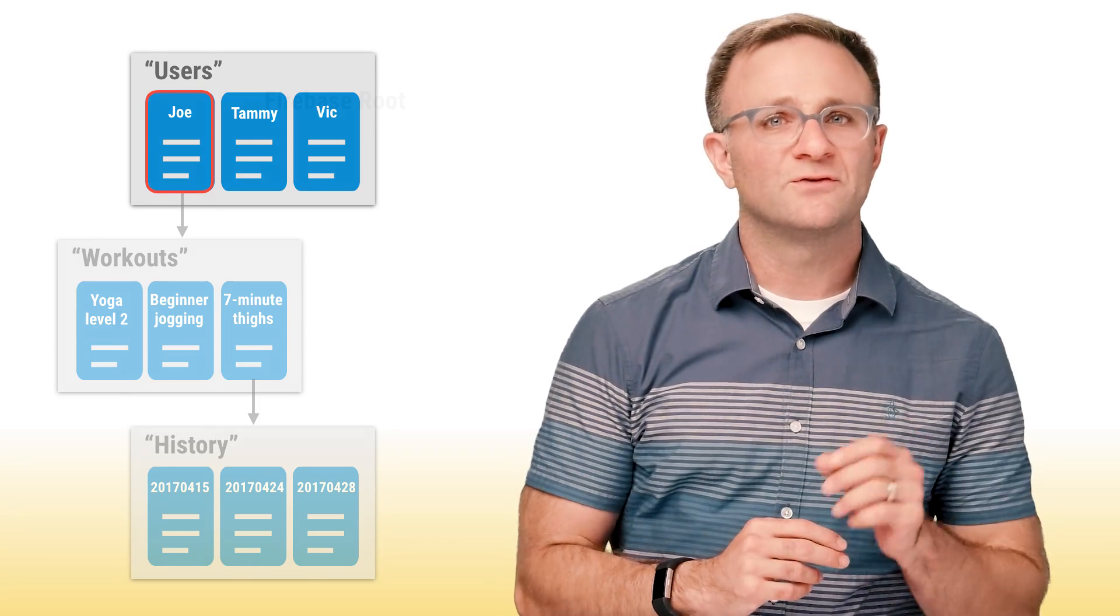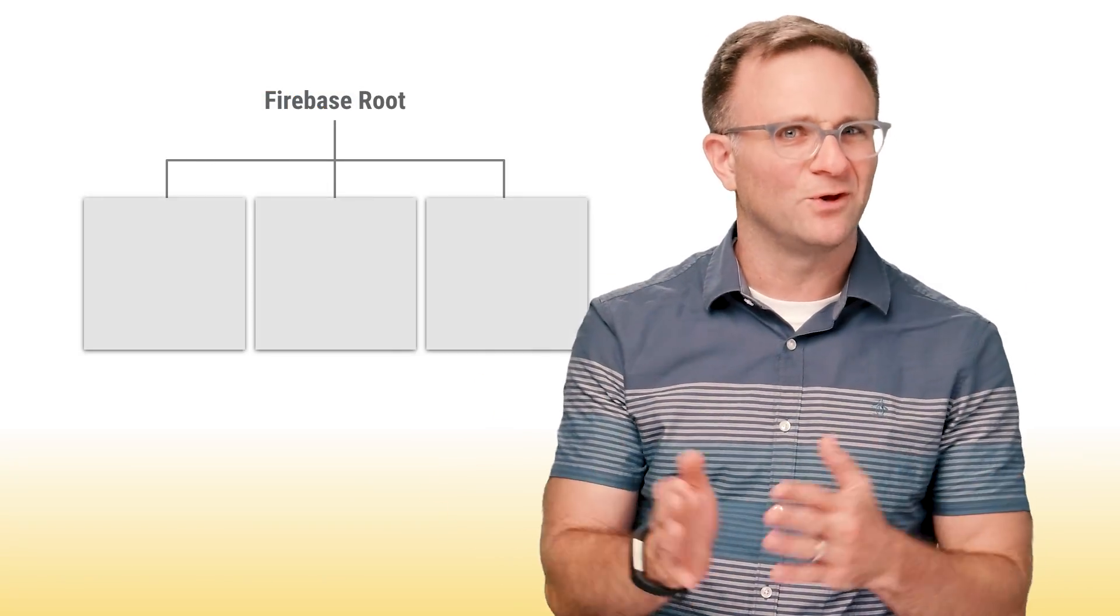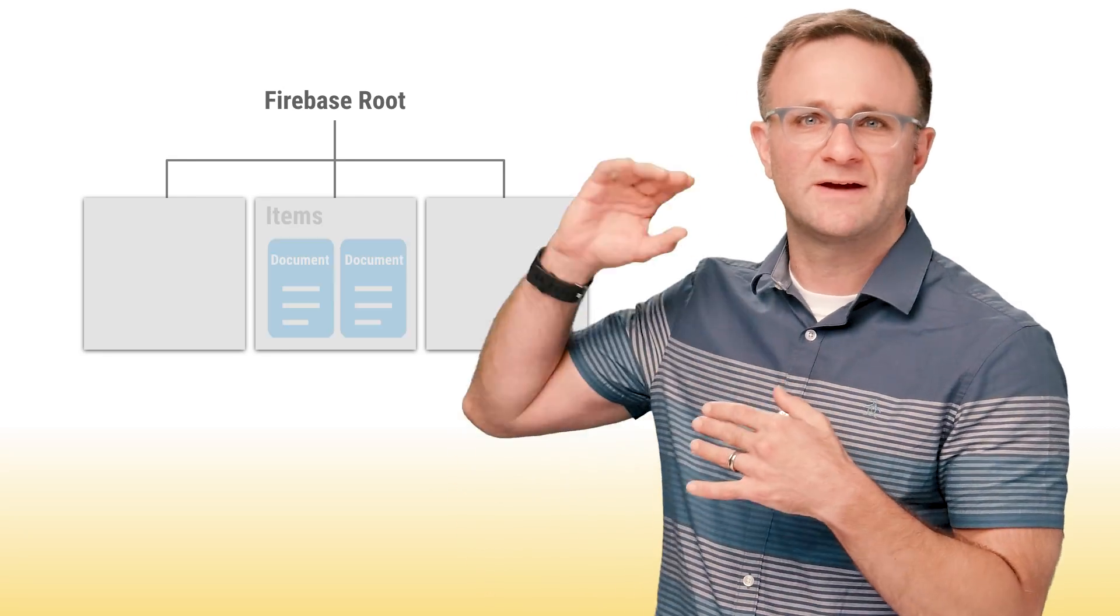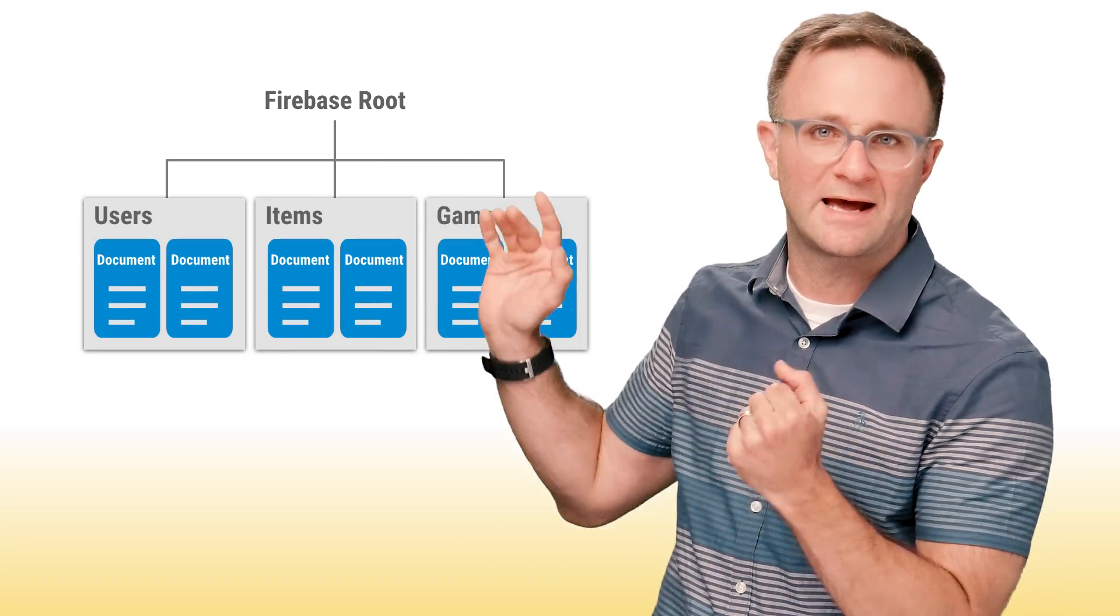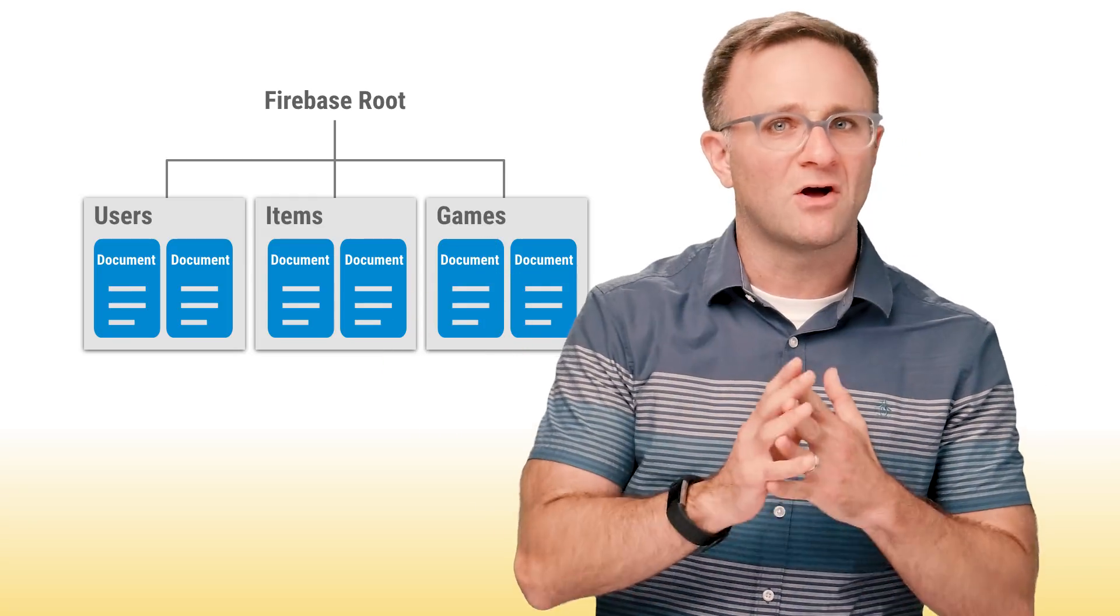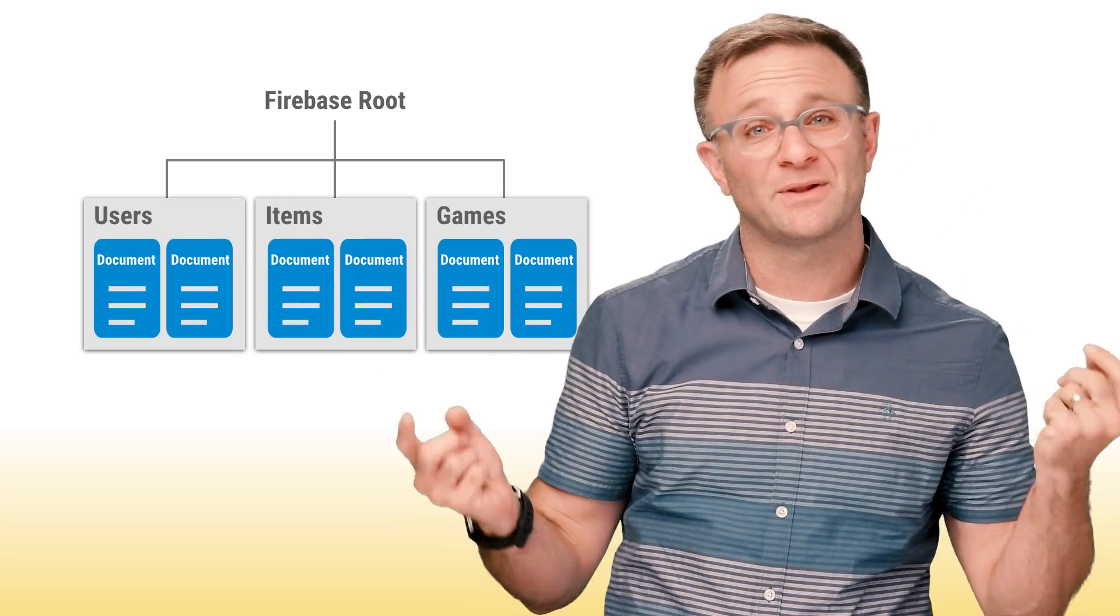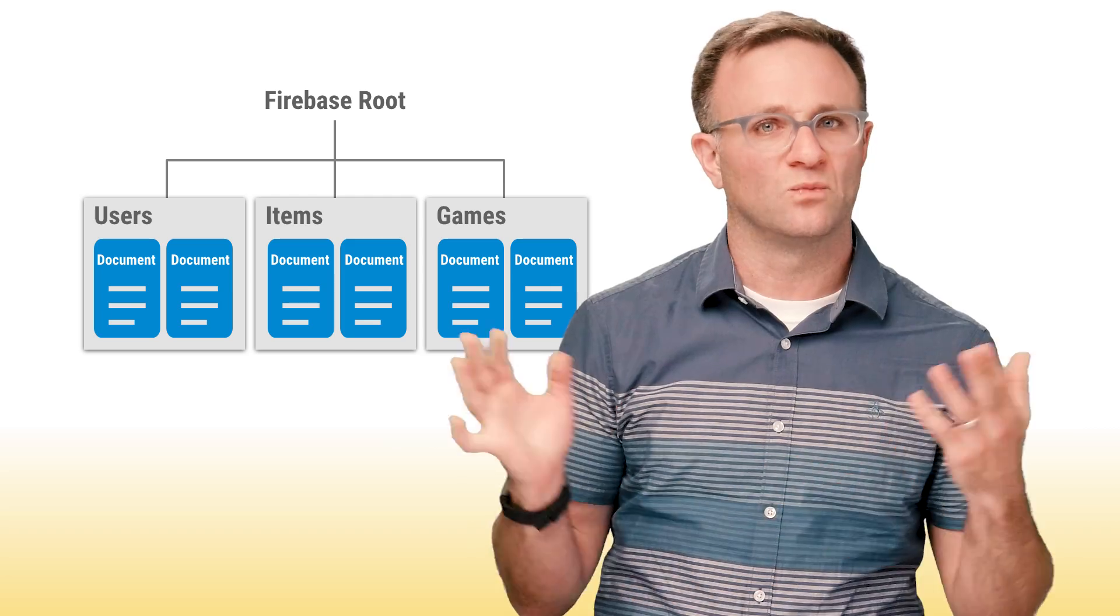The third rule is that the root of your database can only consist of collections. In a normal production app, this is going to feel pretty natural. You'll have your collection of items, and your collection of users, and your collection of games, or what have you. The one time it's going to seem a little awkward is when you are creating a little test app like ours, and you want to save one string.